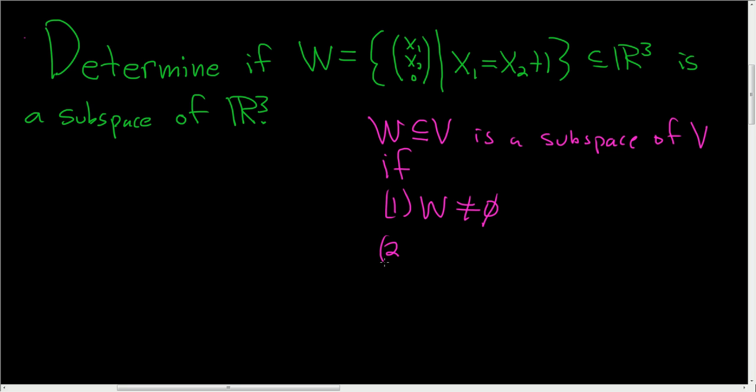The second condition is that W is closed under vector addition. So if you take two vectors, X and Y in W, then whenever this happens, the sum X plus Y must also be in W. So this is called closure under vector addition.